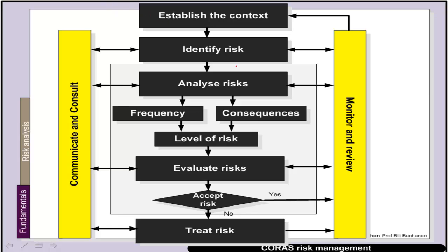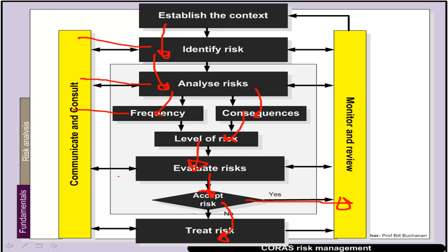When it comes to the management of risk, we can define a basic framework. We establish a context for the risk, identify it, then analyse the risks involved — especially for frequency, consequence, and the level of risk. Then we evaluate these risks and do a cost-benefit analysis to decide whether we accept the risk or not. If we do not accept the risk, then we need to treat it in some way; otherwise we monitor and review. At each of these stages, we want to consult and communicate with our staff to make sure everyone in the organisation understands the risks involved.